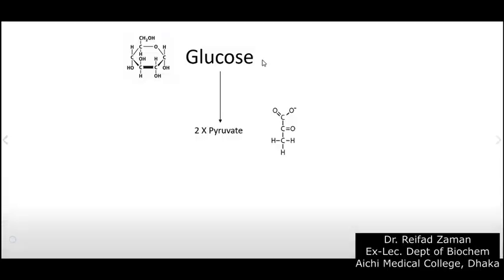In this video we are going to explain the link reaction. Previously we have seen glycolysis and we saw how a glucose molecule is split in half to give two pyruvate molecules. So now the question comes, what happens to the pyruvates? Well, that depends on the presence of oxygen.